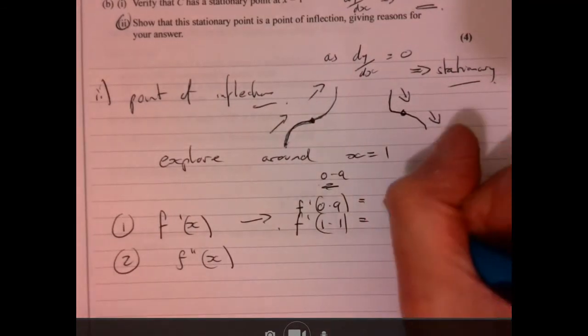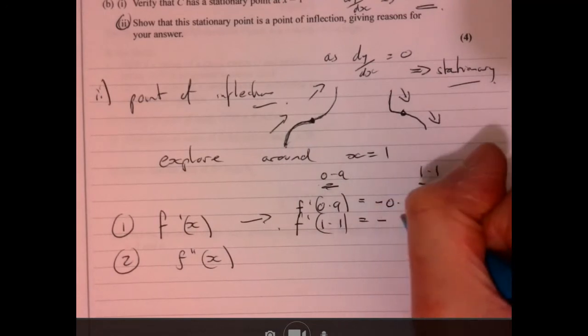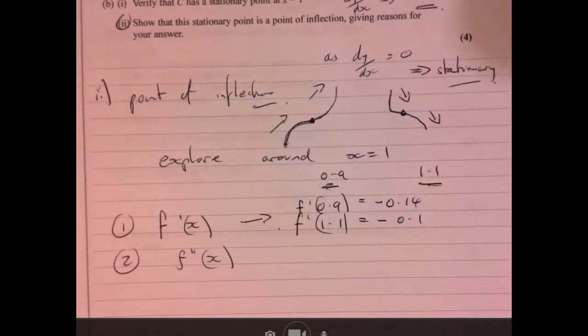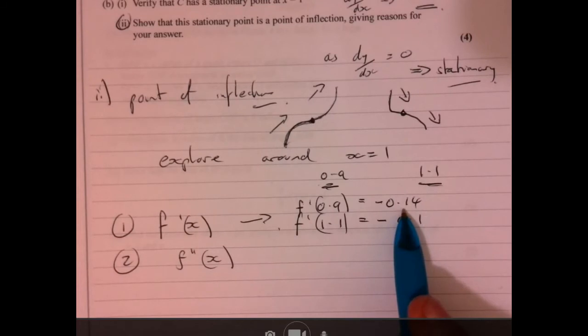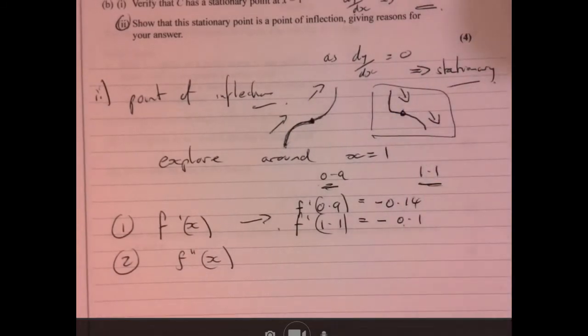Now if you explore this idea, if you look at 0.9 and 1.1, okay, what happens is there we get minus 0.14, minus 0.1. So that means it's a negative gradient before and a negative gradient after. So it's backing up this idea just here.